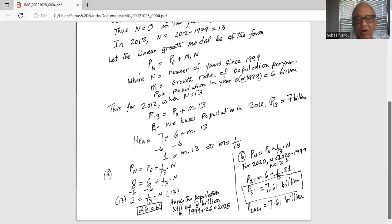To leave n on the right hand side of the equal sign. And on the left hand side, 13 times 2 equals 26. Hence, the population will be 8 billion in 1999 plus 26 more years, which is 2025.